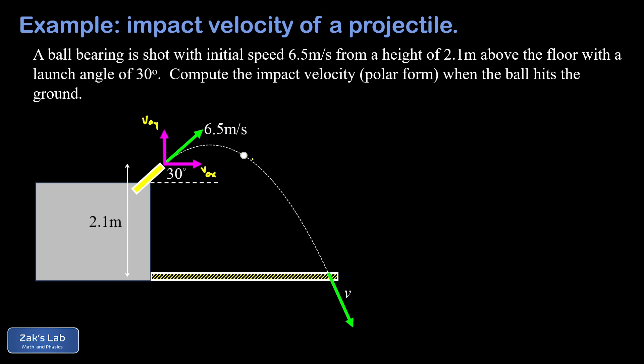We compute these in the usual way. V naught x is going to be 6.5 cosine of 30 and that gives us about 5.63 meters per second. V naught y, that's 6.5 sine 30, and that gives us 3.25 meters per second.